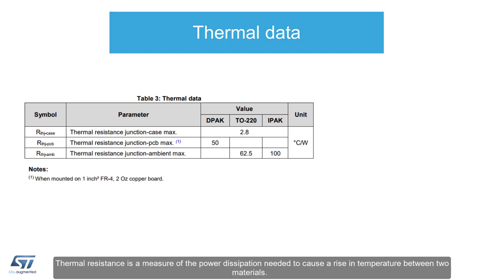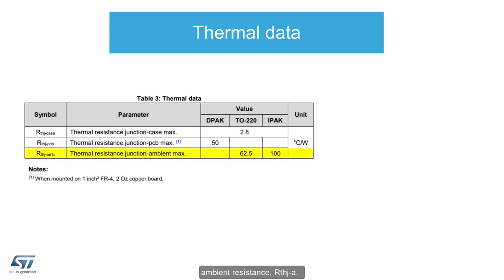Thermal resistance is a measure of the power dissipation needed to cause a rise in temperature between two materials. Often the MOSFET datasheet will specify two such resistances, the junction to case resistance, RTHJ to C, and junction to ambient resistance, RTHJ to A.